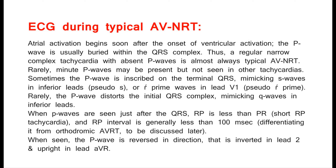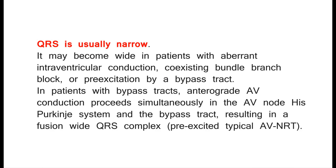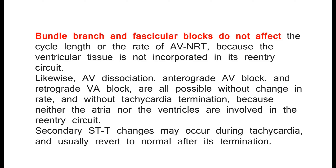When seen, the P-wave is reversed in direction — inverted in lead II and upright in lead aVR. The QRS is usually narrow. It may become wide in patients with aberrant intraventricular conduction, coexisting bundle branch block, or pre-excitation by a bypass tract. In patients with bypass tracts, anterograde AV conduction proceeds simultaneously in the AV node–His–Purkinje system and the bypass tract, resulting in a fusion wide QRS complex — pre-excited typical AVNRT. Bundle branch and fascicular blocks do not affect the cycle length or rate of AVNRT, because ventricular tissue is not incorporated in its re-entry circuit.